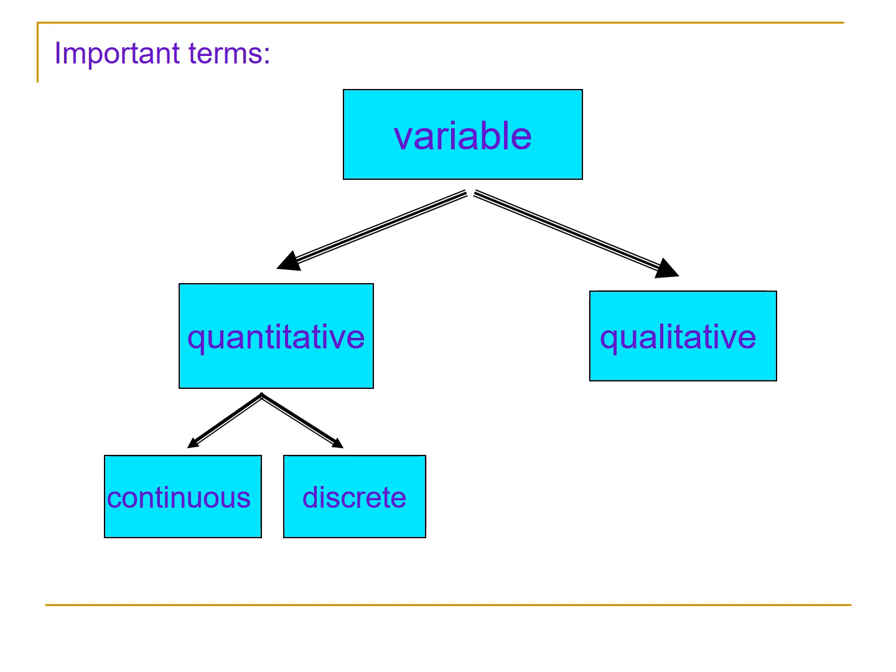Quantitative variable can be classified into continuous or discrete. Quantitative variable is continuous if you can have a value in between two counting numbers. An example of this is weight. You can have a weight of 45 kilograms or 50 pounds. Another example is weekly allowance. You can have 250.5, meaning 250 pesos and 50 centavos.